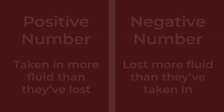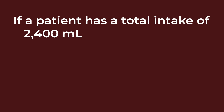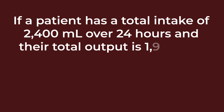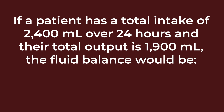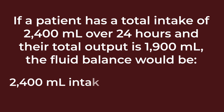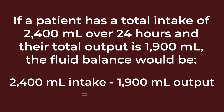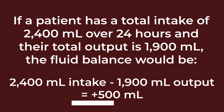Let's walk through a quick example. If a patient has a total intake of 2,400 milliliters over 24 hours and their total output is 1,900 milliliters, the fluid balance would be 2,400 mL minus 1,900 mL, which equals plus 500 milliliters. That positive balance means the patient has retained 500 milliliters more fluid than they've lost over that time period.